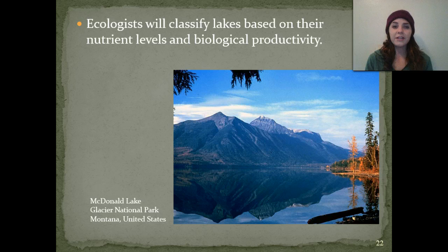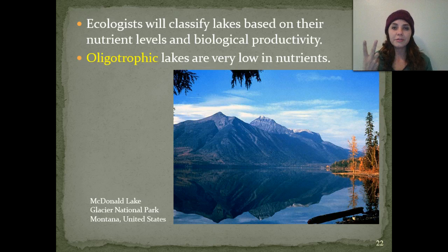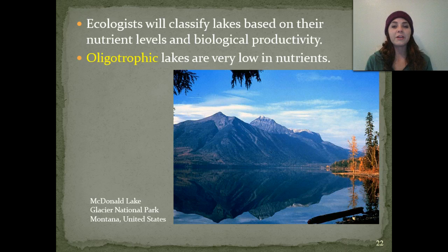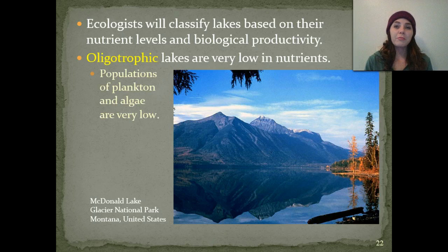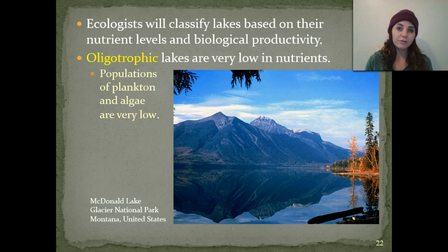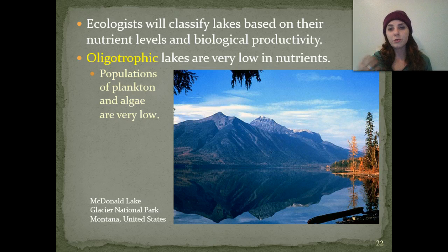Ecologists will classify lakes based on their nutrient levels as well as their biological productivity. The two main types of lakes are oligotrophic and eutrophic. Oligotrophic lakes are going to be very low in nutrients. We have populations of plankton and algae that are going to be very low. So if we have producer levels that are very low, they're not going to be able to support a lot of consumers, and you're not going to see a lot of different types of consumers in that area.